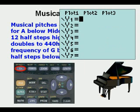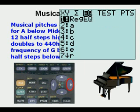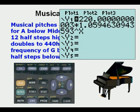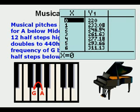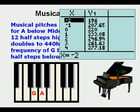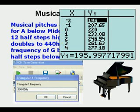We paste that into Y equals by going to Vars, then 5, Statistics, arrow twice to the right to EQ, then press Enter. This is our function. We evaluate by going to 2nd, Graph to get the table view. We need to scroll down to x equals negative 2 for two half steps below A. At x equals negative 2, the output frequency is 196 hertz, which rounds off evenly to 196.